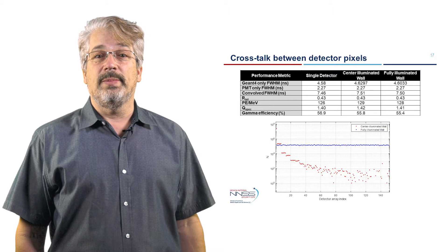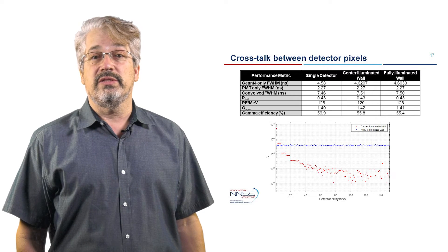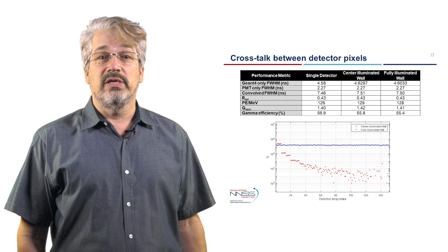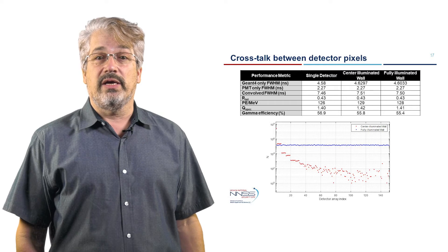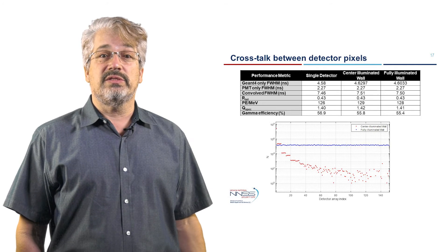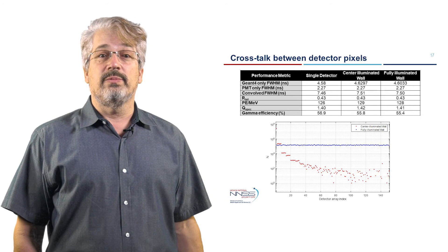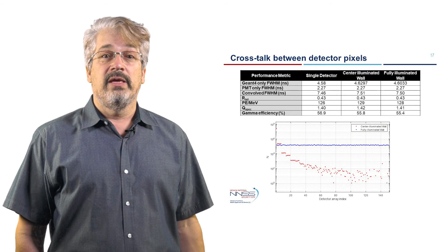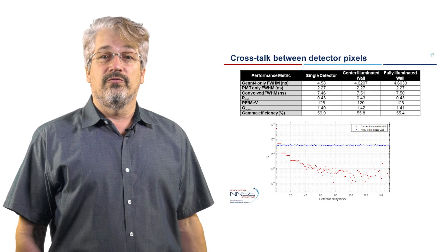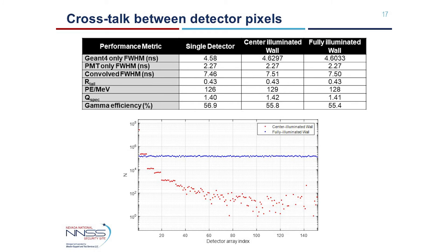In the fully illuminated case, the response of all 151 detectors is approximately the same. In the center-illuminated case, the center detector has the highest response, and as you move out from the center, the detector response decreases. This staircase distribution indicates the presence of crosstalk between neighboring detector pixels. Detectors at the same distance away from the center-illuminated detector have similar responses. Note that the detector array index starts with the innermost detector and winds counterclockwise outwards.